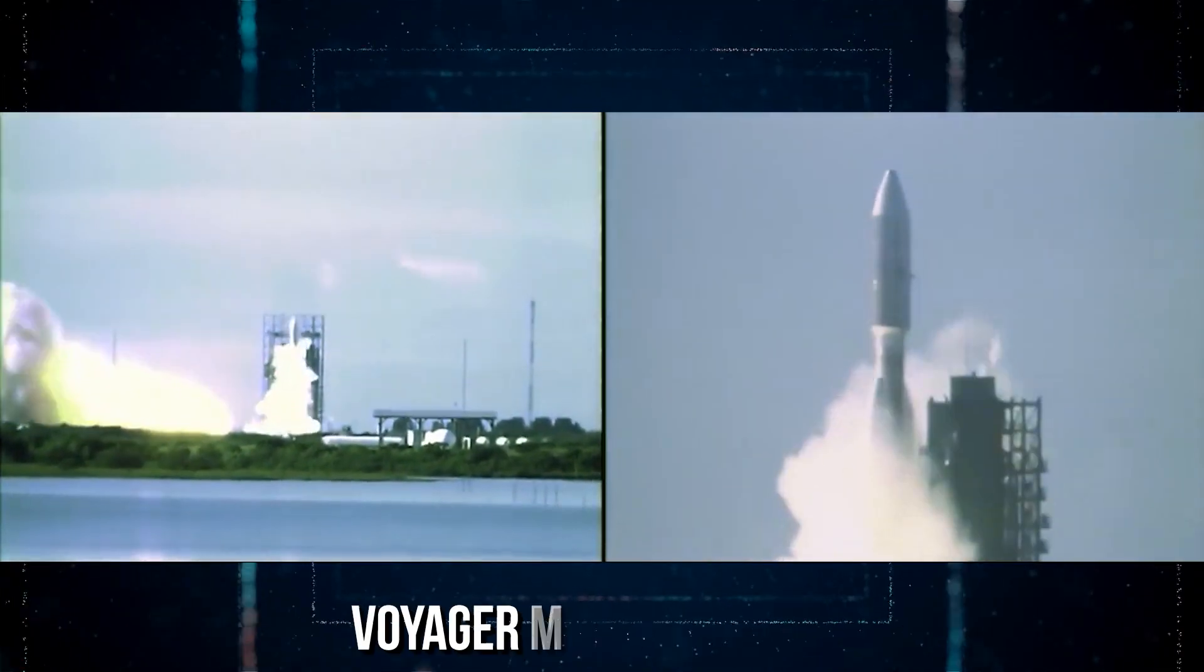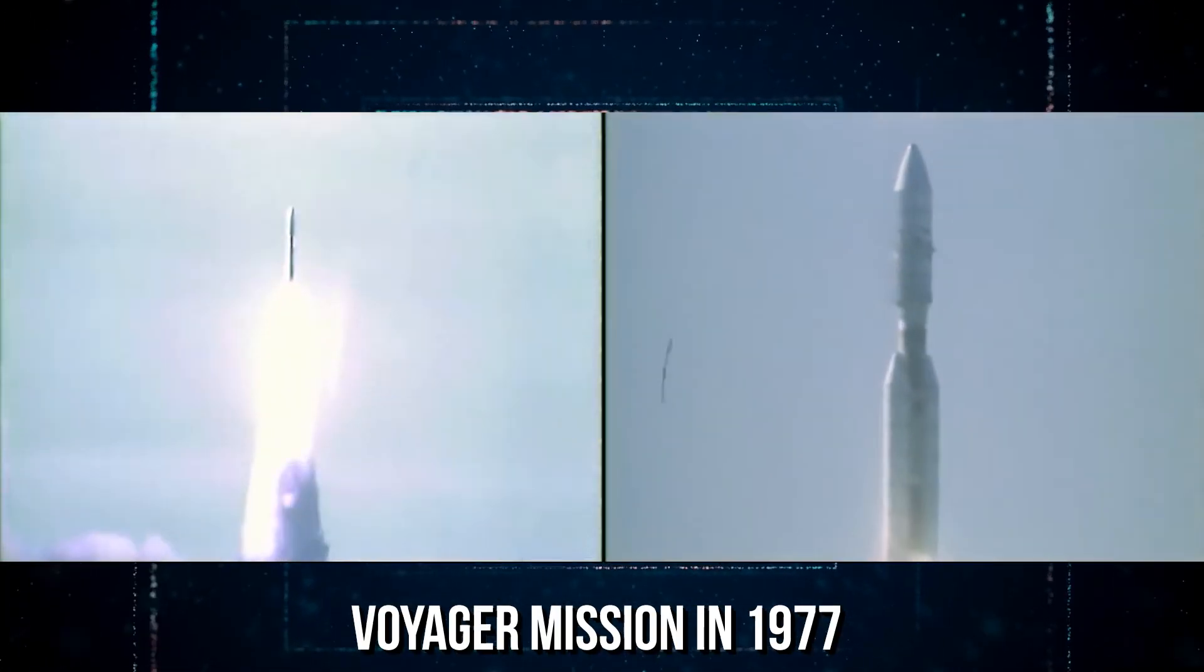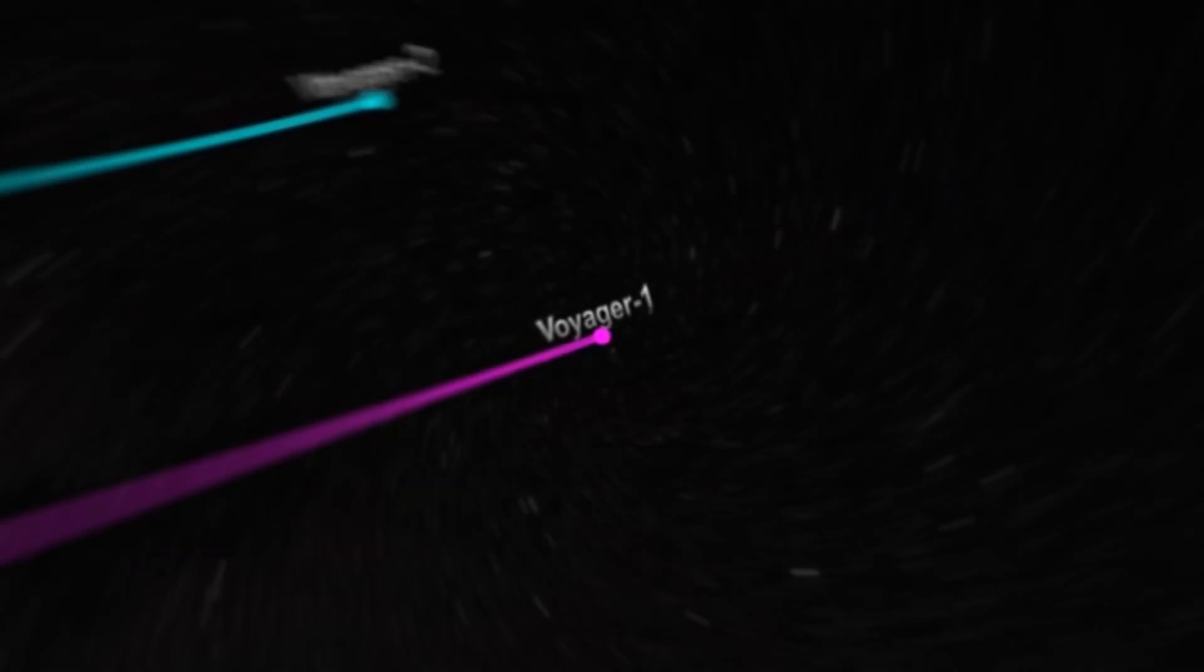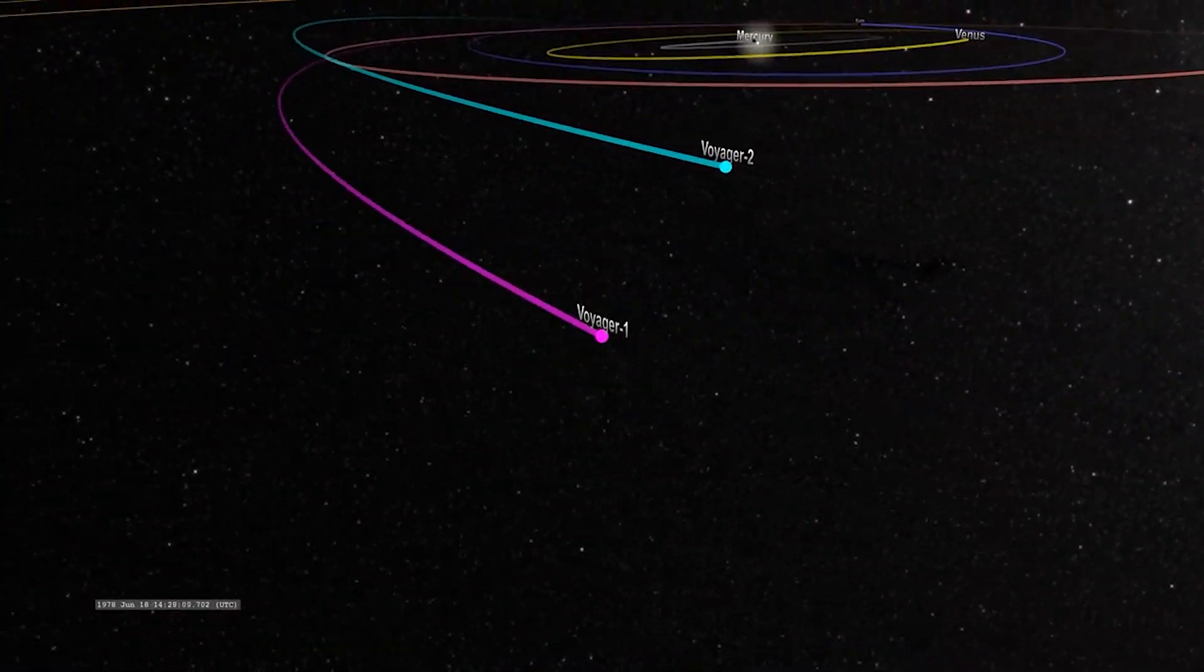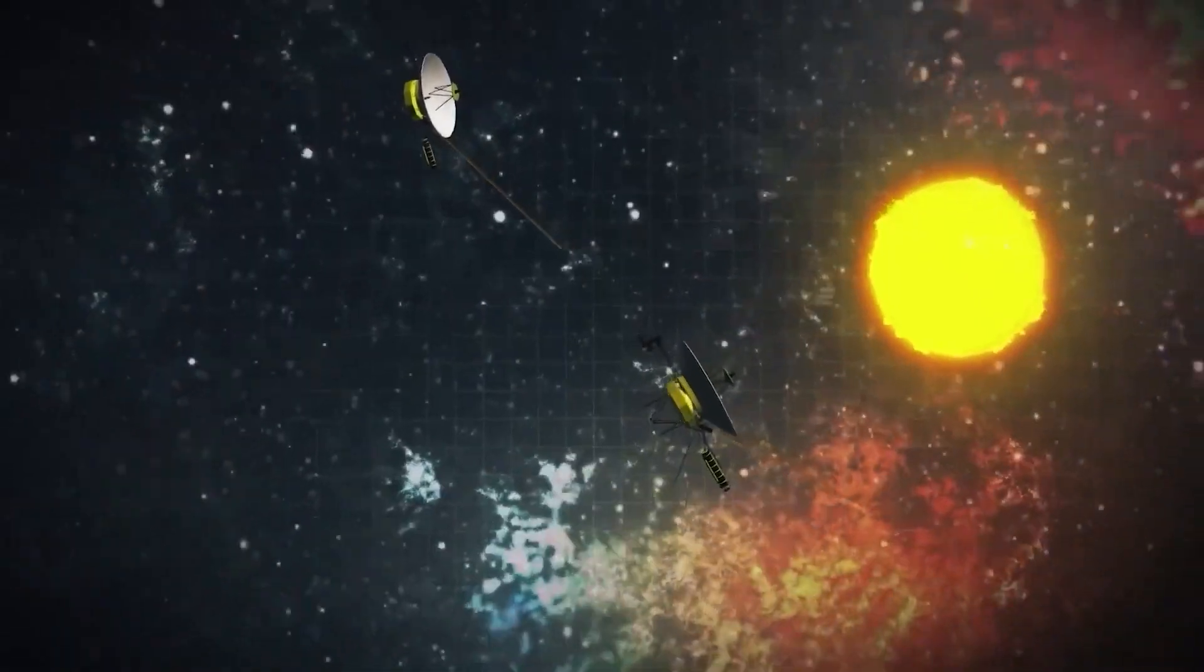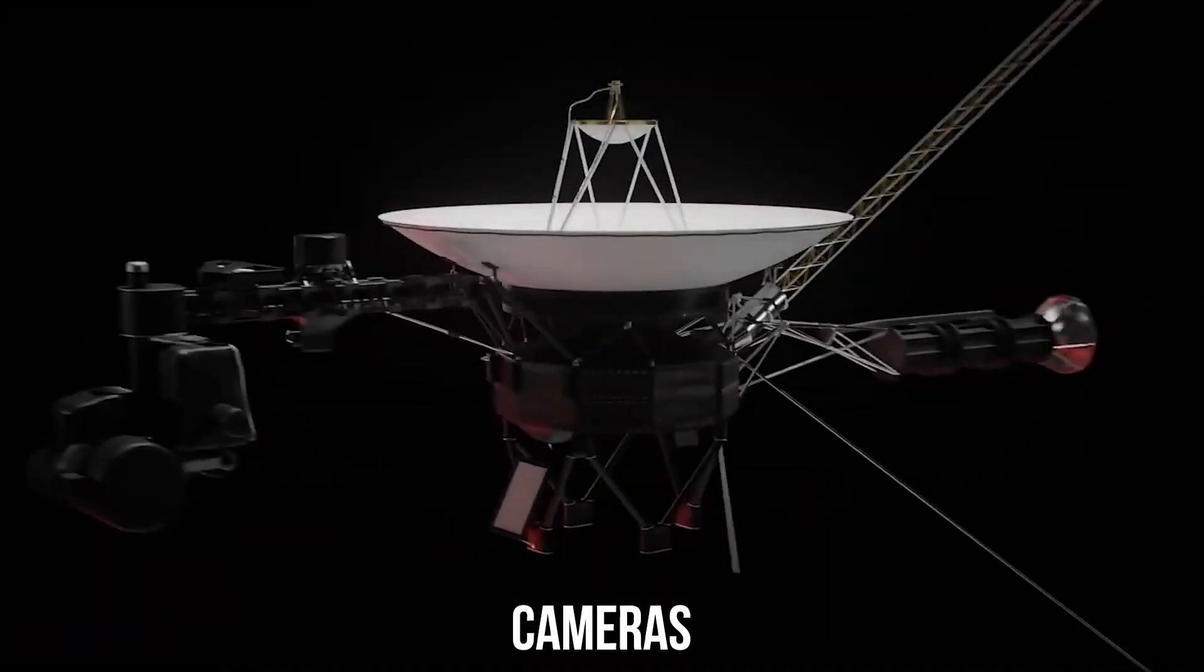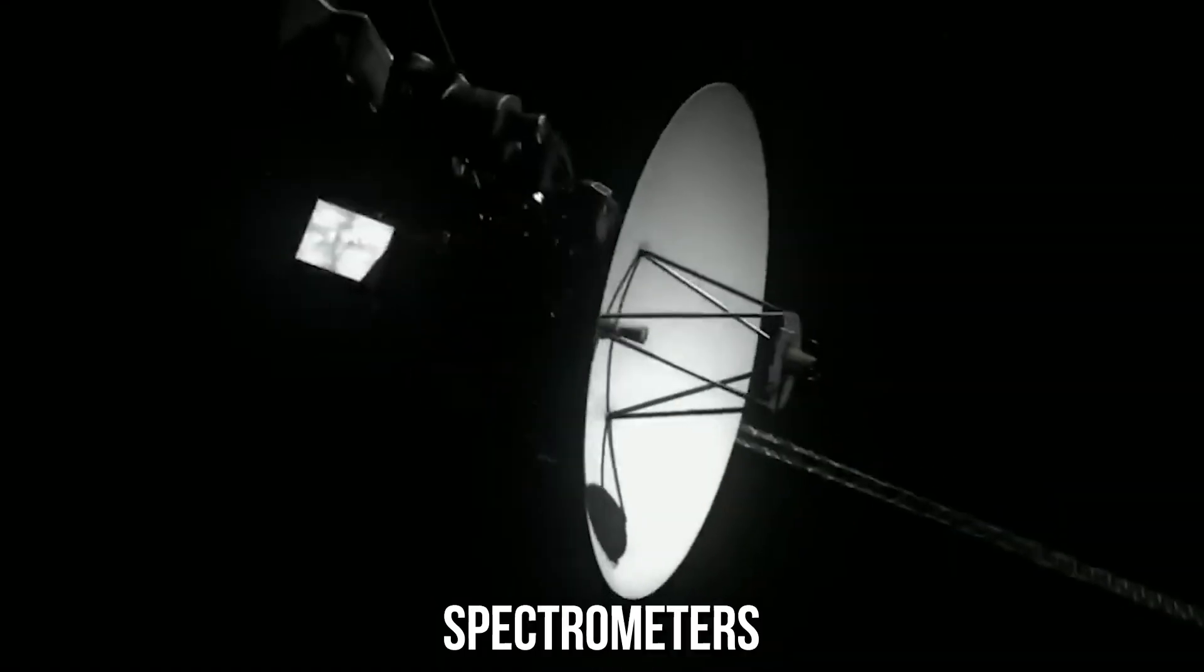NASA launched the Voyager mission in 1977 with the primary goal of exploring the outer planets of our solar system. Voyager 1 and its twin spacecraft, Voyager 2, were equipped with instruments designed to study the planets and their moons, including cameras, magnetometers, and spectrometers.